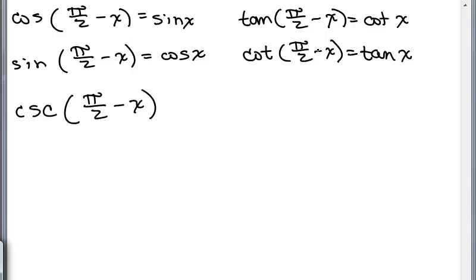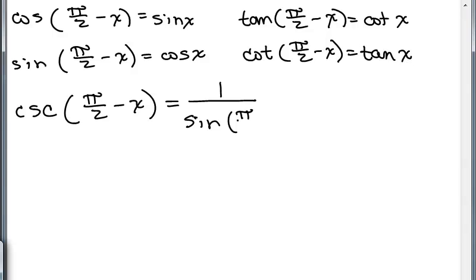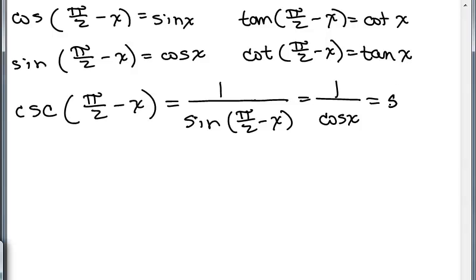We've done four of them so far. How would we do the cosecant of pi over 2 minus X? Well, we know that's the reciprocal function of sine. So that's 1 over the sine of pi over 2 minus X. But what is the sine of pi over 2 minus X? That's the cosine of X. And 1 over cosine of X is the same thing as the secant of X. There's our fifth cofunction identity.